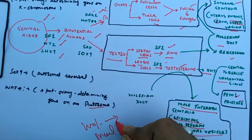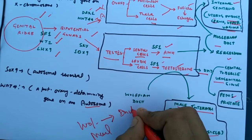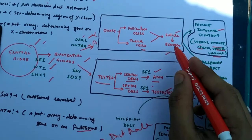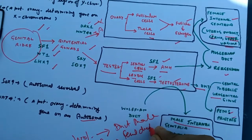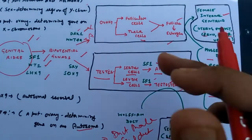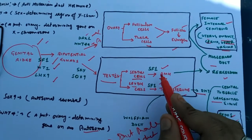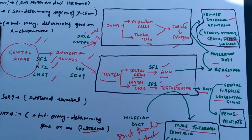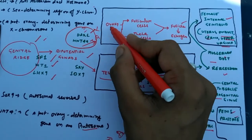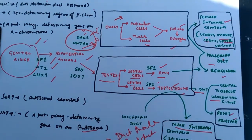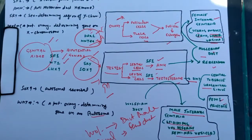In summary: the Wolffian duct in males forms the male ducts under the effect of testosterone, while the Müllerian duct under the effect of estrogen forms the female ducts. AMH, the anti-Müllerian duct hormone created by Sertoli cells in developmental stages, regresses the growth of the Müllerian duct. If signals are received through female-pathway genes, a female offspring forms; through male-pathway genes, a male offspring forms.